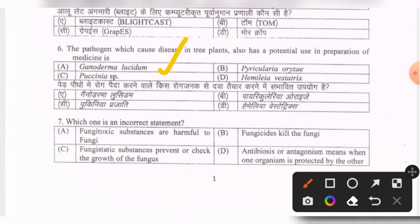Next question: which one is an incorrect statement? Options — fungitoxic substances are useful to fungi; fungicides kill fungi; fungistatic substances prevent or check growth of fungus; antibiosis or antagonism means one organism is protected by the other. The correct option is D.